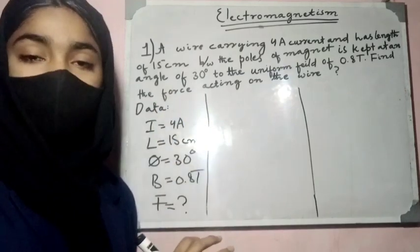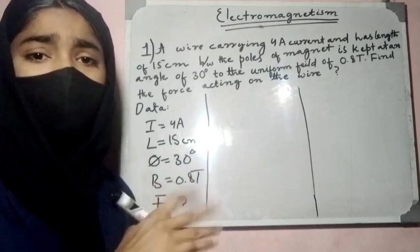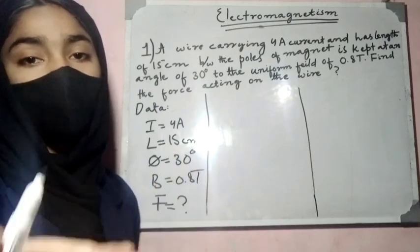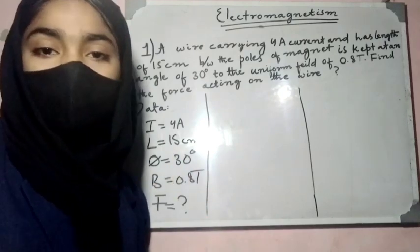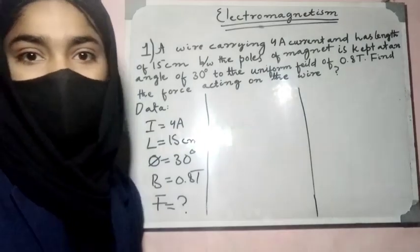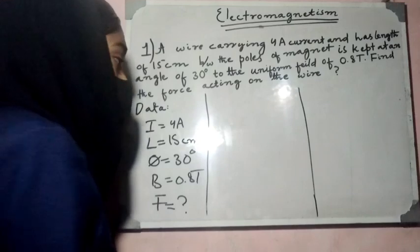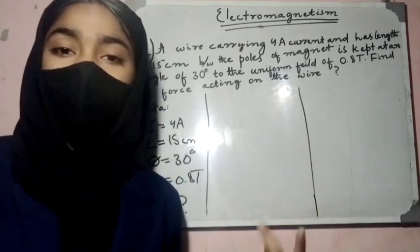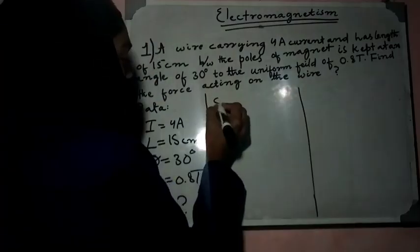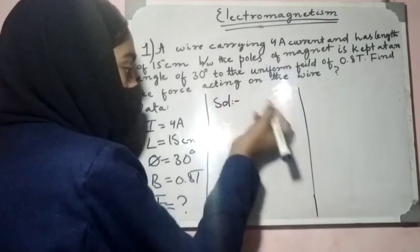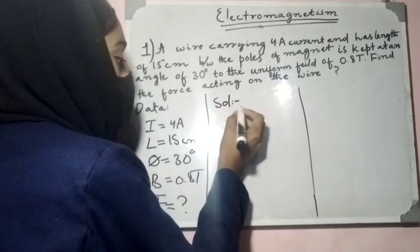The current is 4 ampere, the length is 15 cm. After that, the angle is 30 degrees, and the field is 0.8 tesla. And the force is what we need to find.